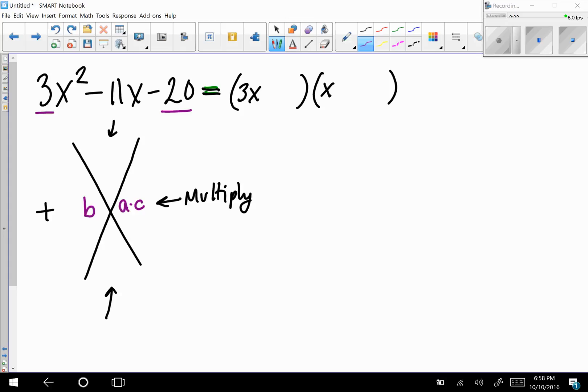So we're going to use that. So let me show you as an example here. So in this case, 3 times negative 20 gives me negative 60. But I want them to add up to be negative 11. Well, that's not so bad. We can determine that those two numbers should be negative 15 and positive 4.